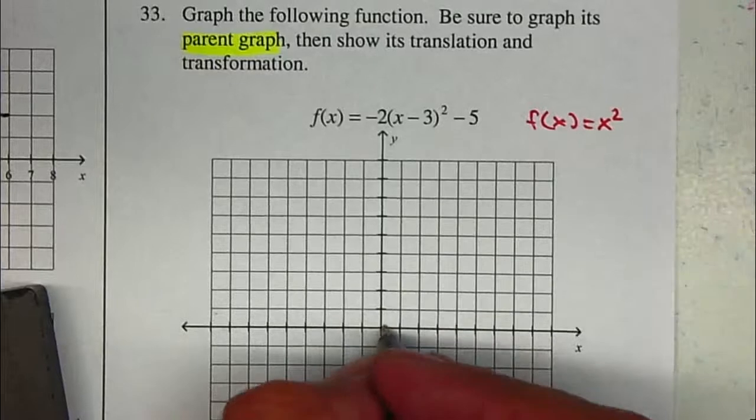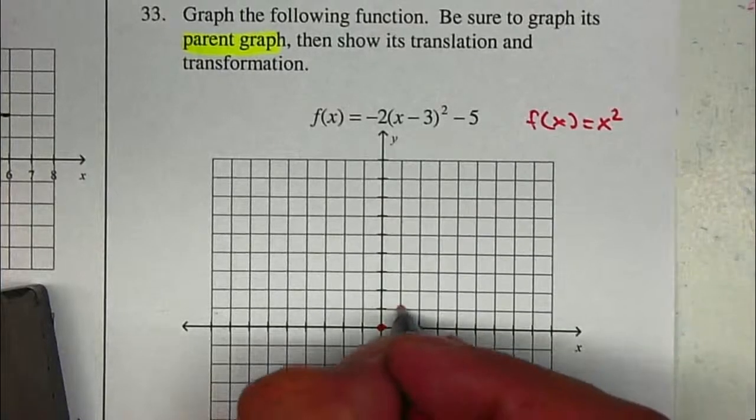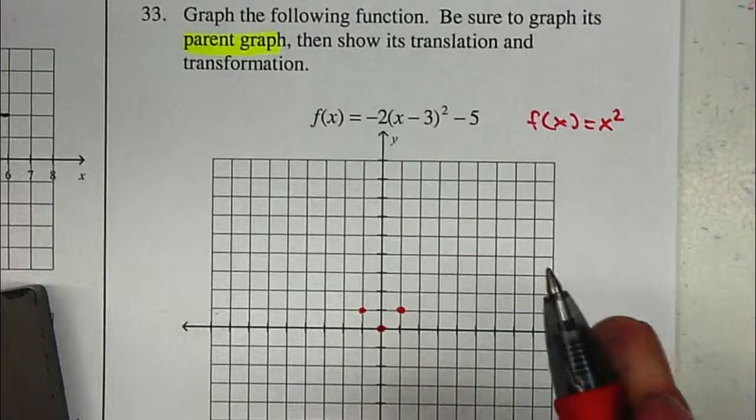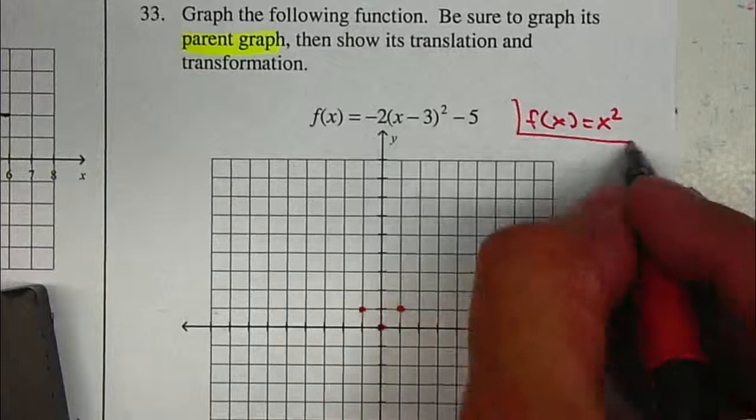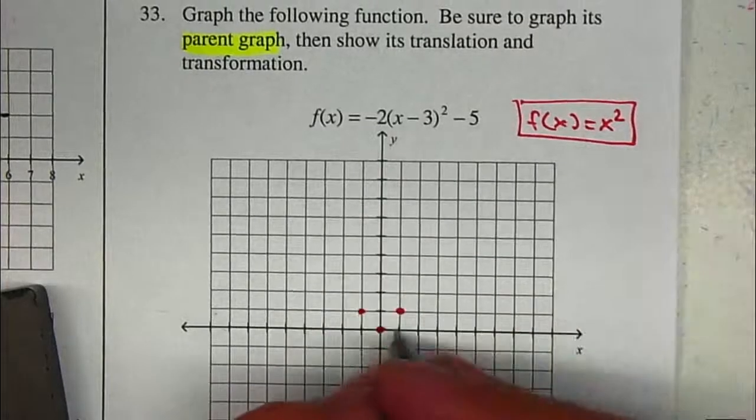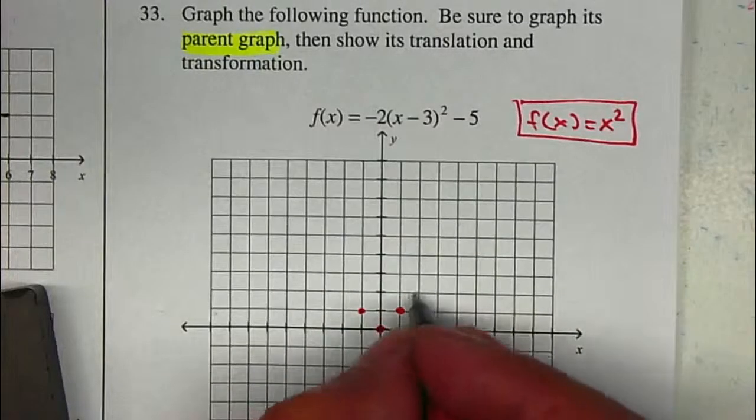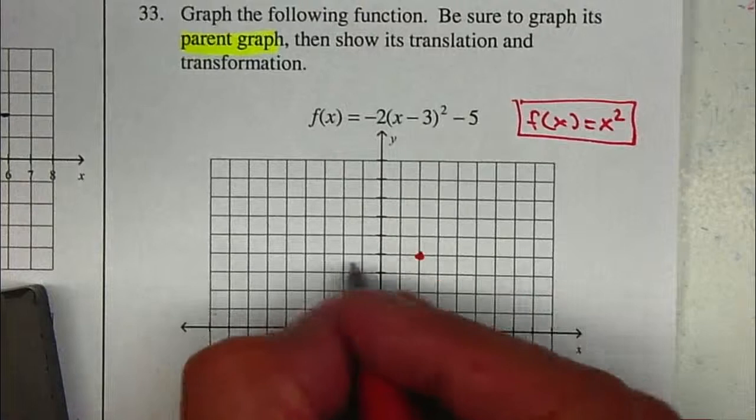Now, if I plug in a 0, it gives me a 0. Plug in a 1 gives me a 1. I'm going to graph the parent graph in red. If I plug in a 2, it gives me a 4, so 2, 4, and reflected.